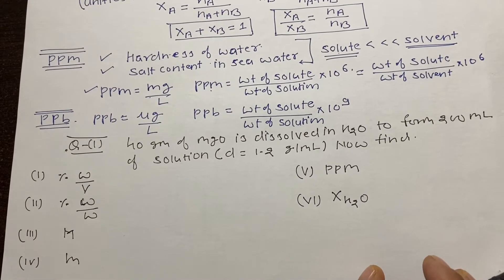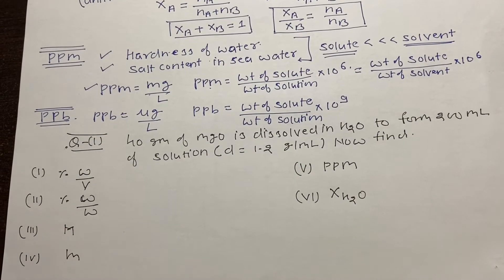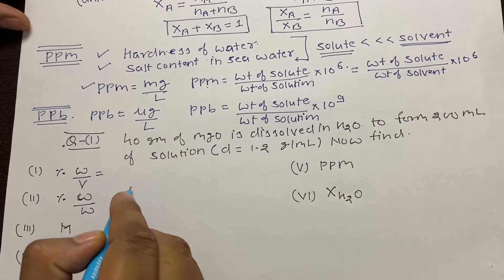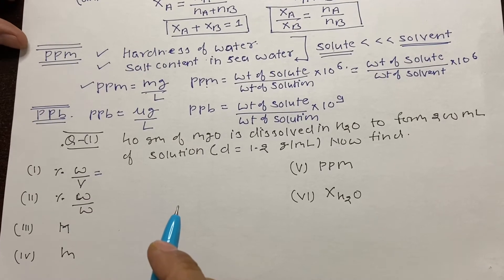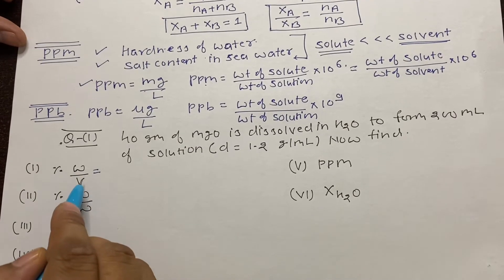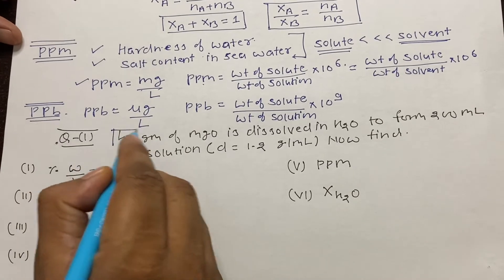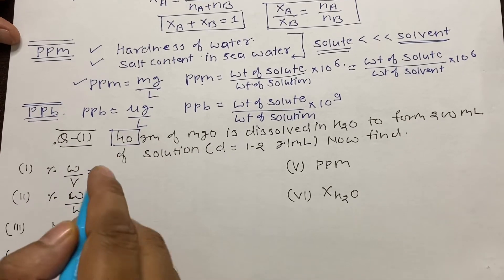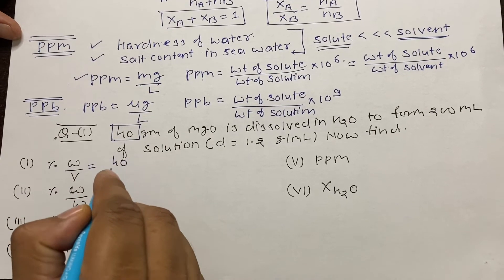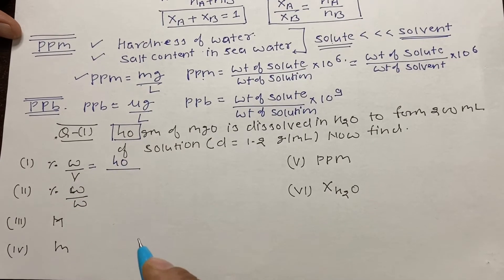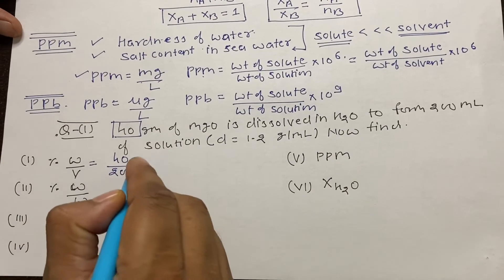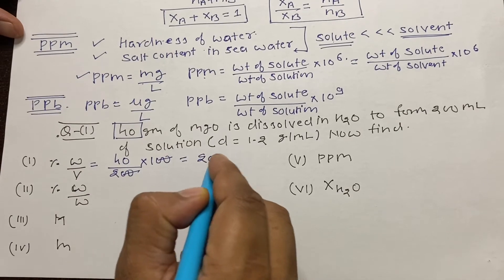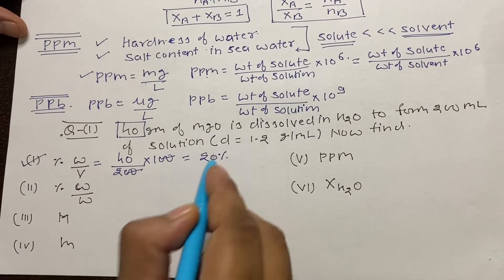Let's solve all these one by one. For percentage w/v: it equals weight of solute divided by volume of solution, multiplied by 100. The weight of solute is 40 grams and the volume of solution is 200 mL. So percentage w/v = (40/200) × 100 = 20%.